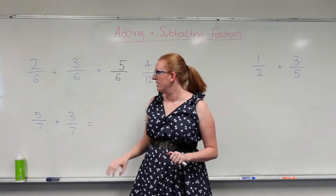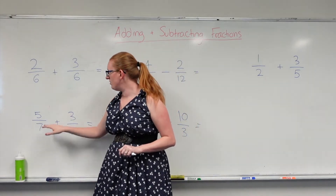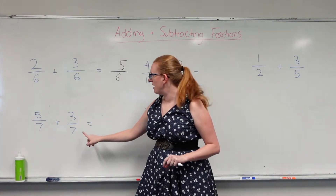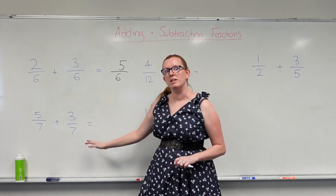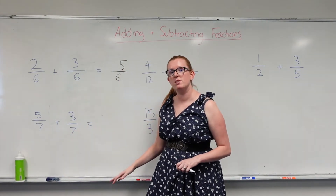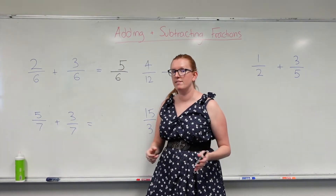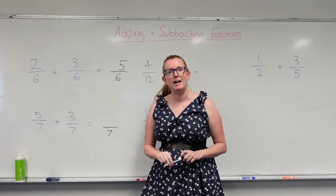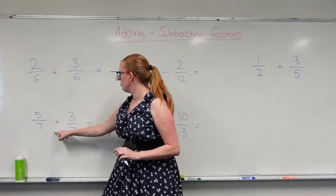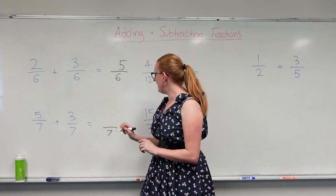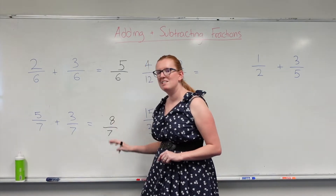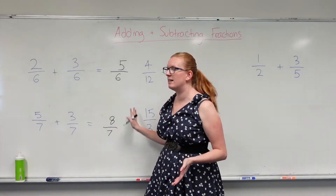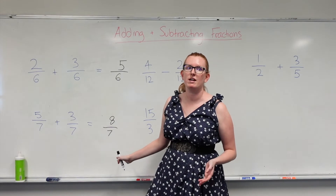Let's have a look at this one. So here I've got 5 over 7 plus 3 over 7. So matching denominators. In the end my denominator is going to stay as 7. All I do is I add my top numbers, so 5 plus 3 gives me 8. So my answer is 8 over 7, and it's perfectly fine if it comes out as an improper fraction.